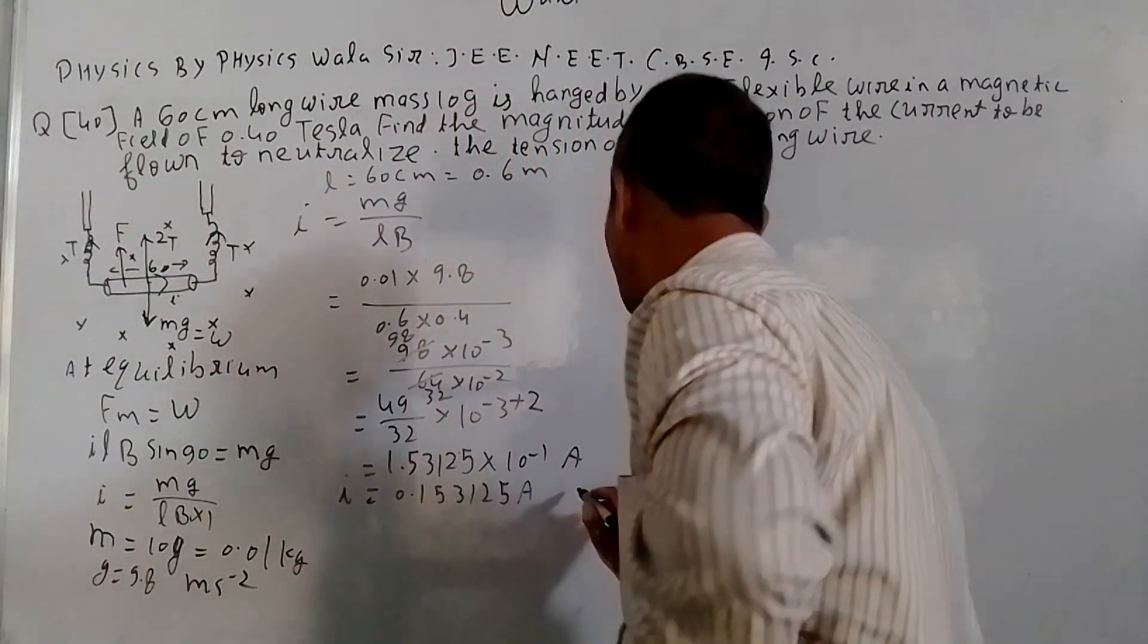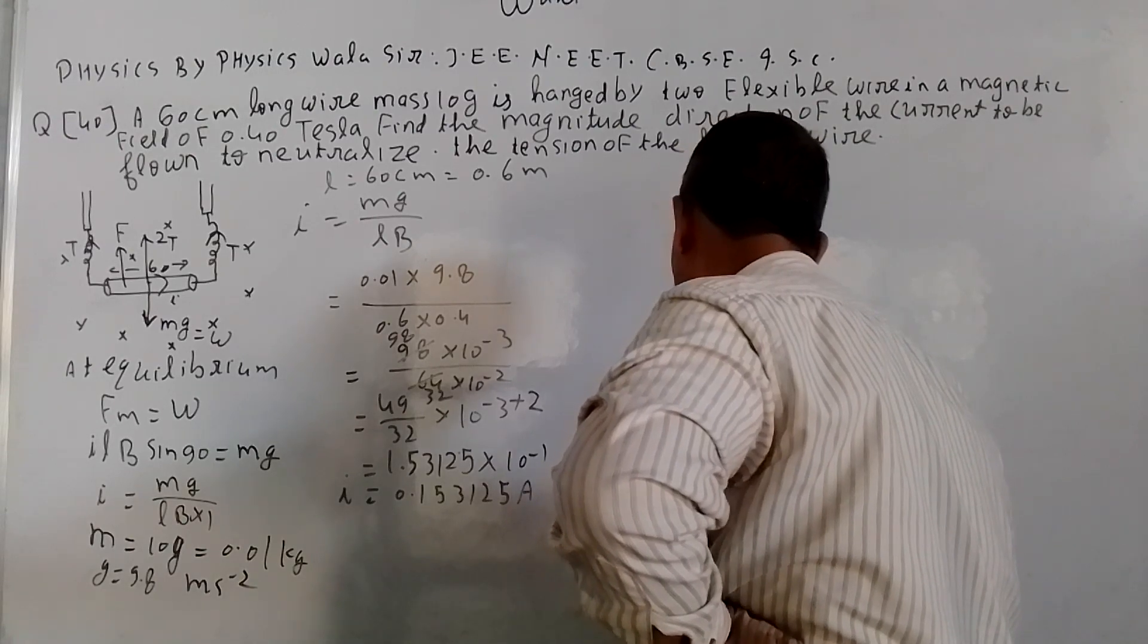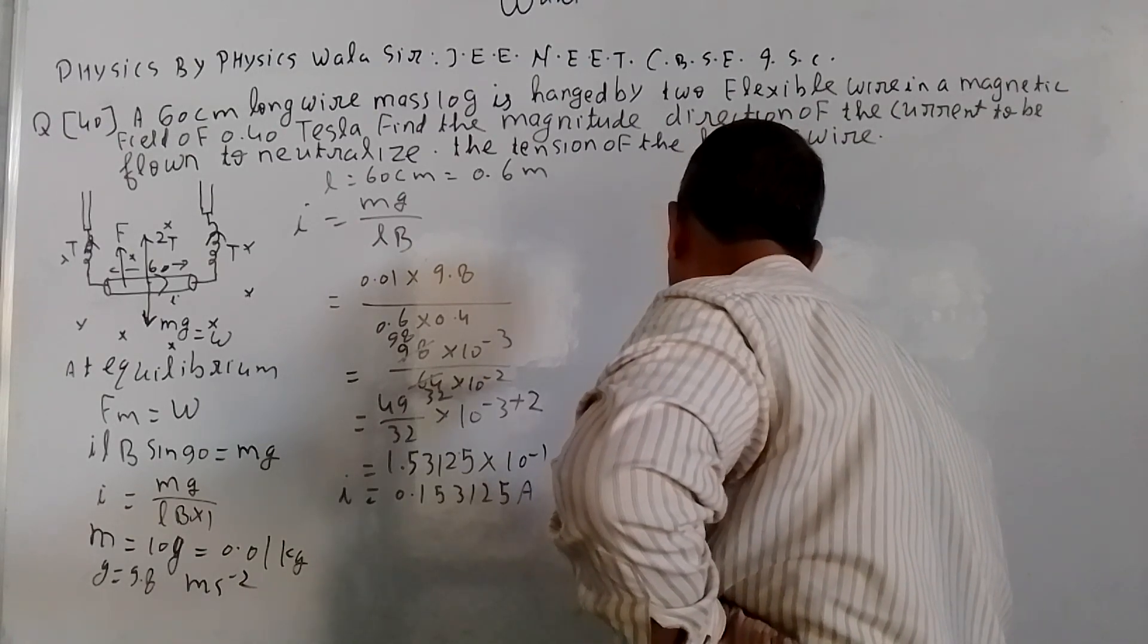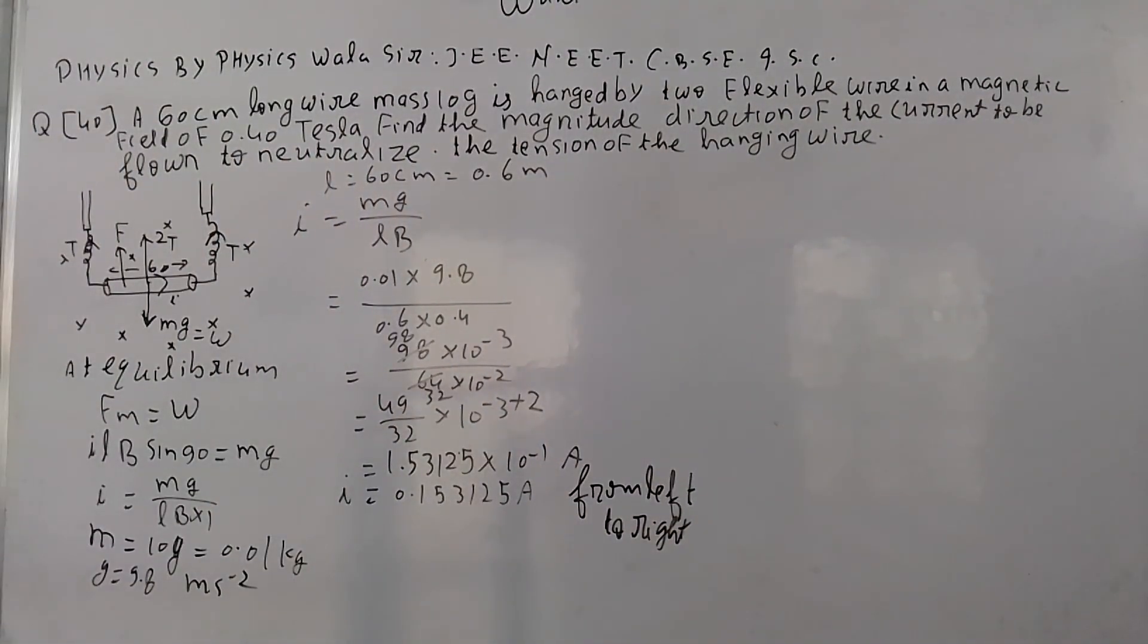Left to right. So left to right. The current is 1.53125 ampere and direction is from left to right.